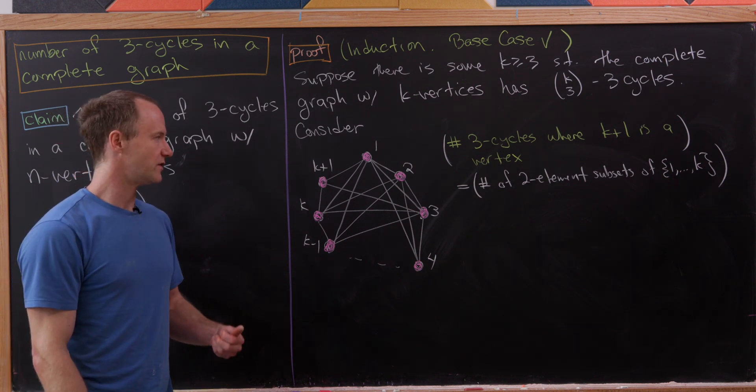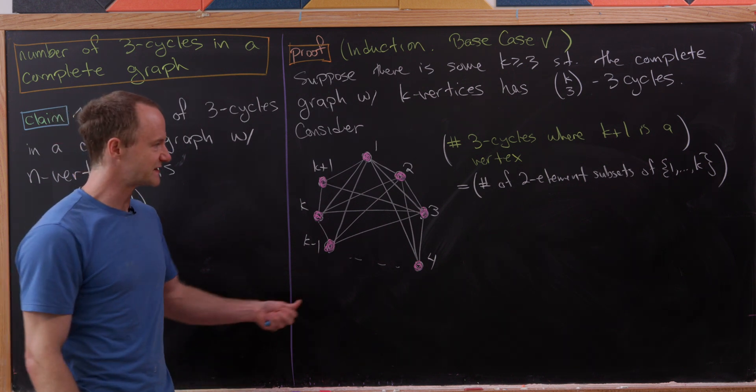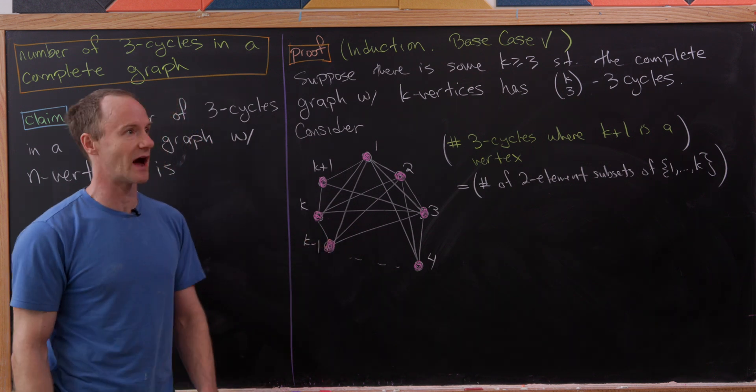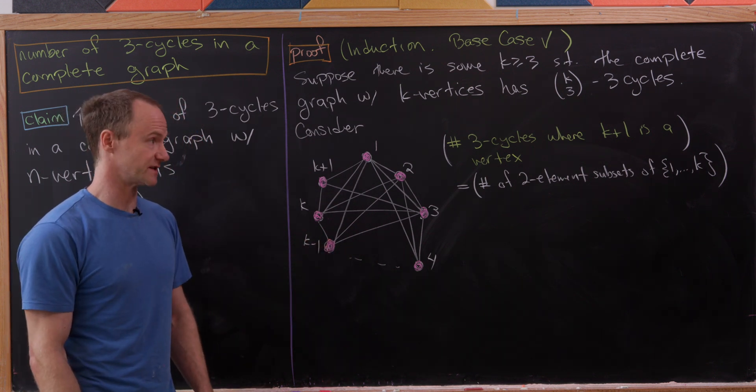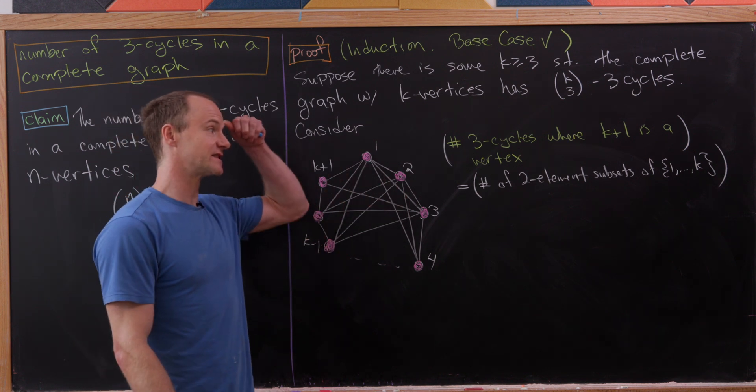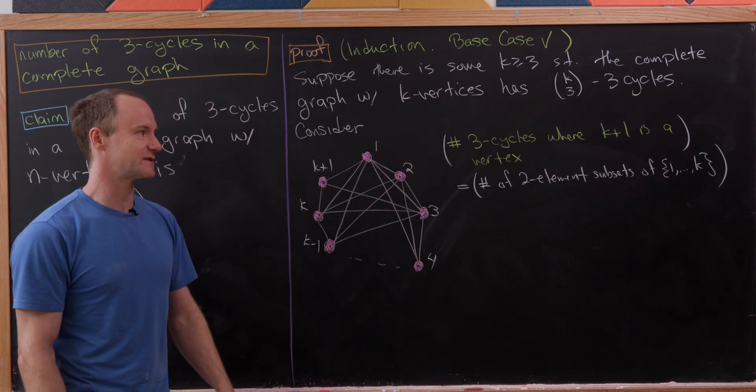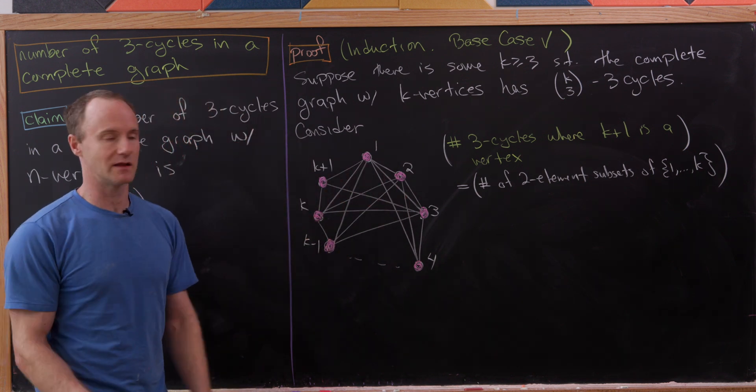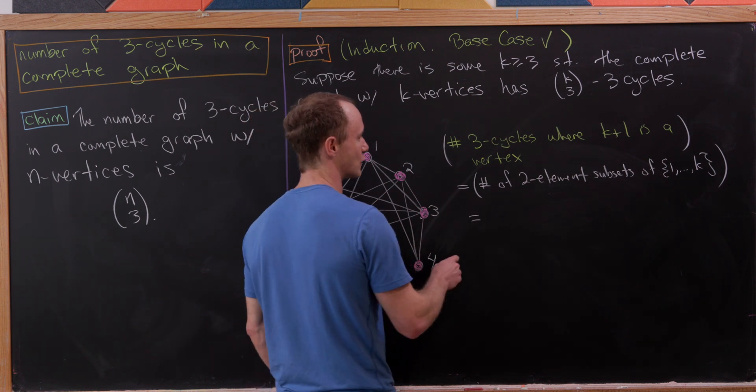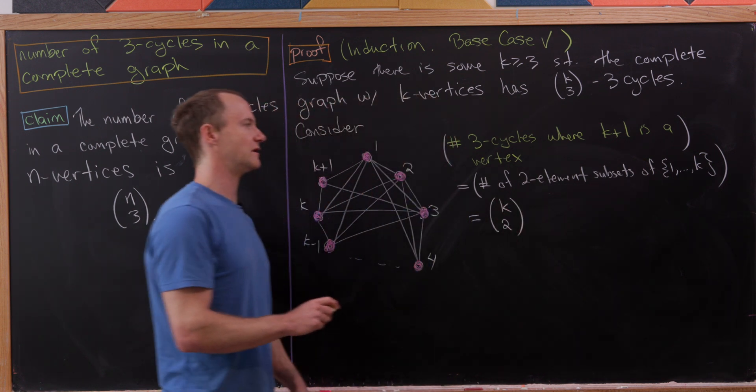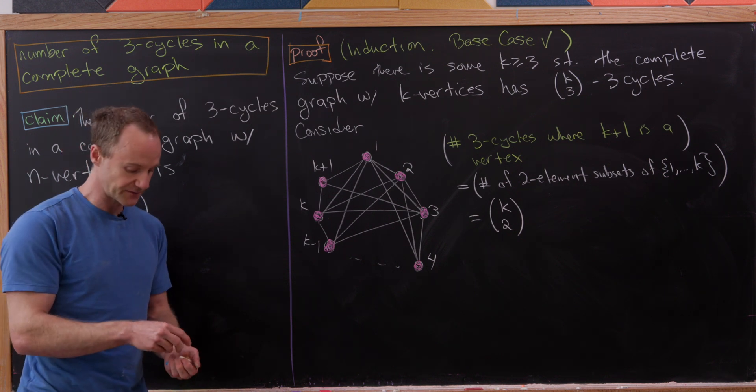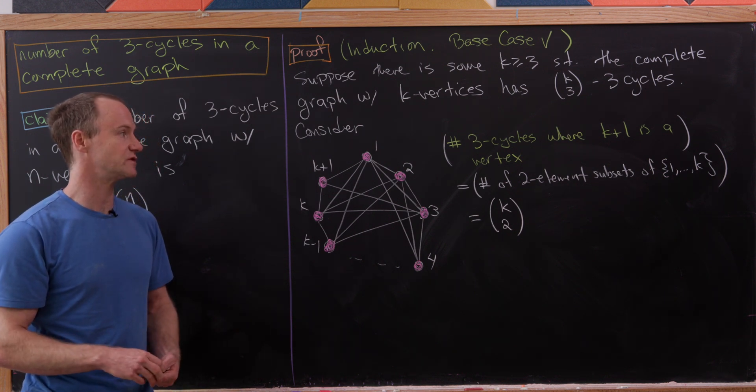Because if we've got k+1 as a vertex, then we have to choose two more vertices. Since this is a complete graph, we can choose any two other vertices. That's exactly the same as making a two-element subset of a k-element set, which is exactly what binomial coefficients were invented for. So the number of three cycles from this flavor equals k choose 2.